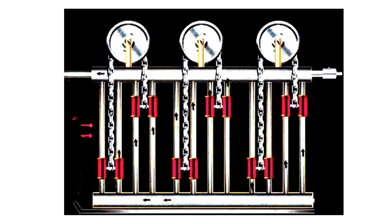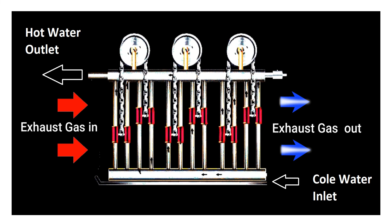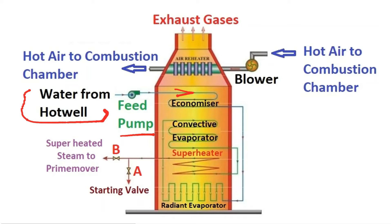The heat exchange between the water and flue gases through the economizer coil increases the temperature of the water. This hot water is then supplied to the evaporator, so less heat energy is required. The economizer improves the overall performance of the boiler.